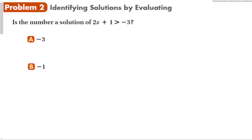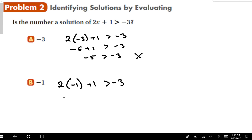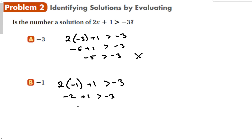Is the number a solution of 2x + 1 > -3? Let's plug in numbers. For x = -3: 2(-3) + 1 = -6 + 1 = -5, and -5 is not greater than -3 — that is not true. For x = -1: 2(-1) + 1 = -2 + 1 = -1, and -1 is greater than -3 — so that one works. Negative 1 makes the inequality true; negative 3 does not.